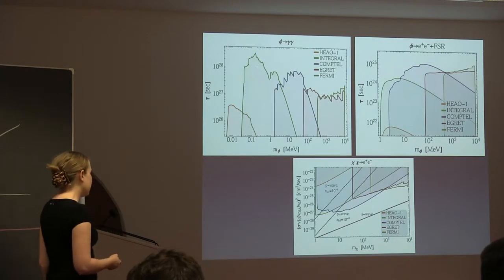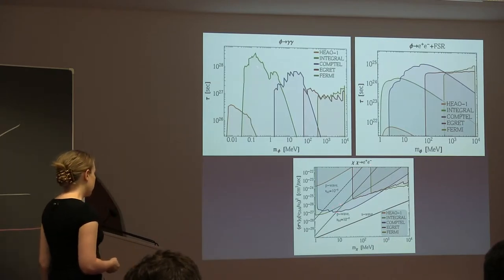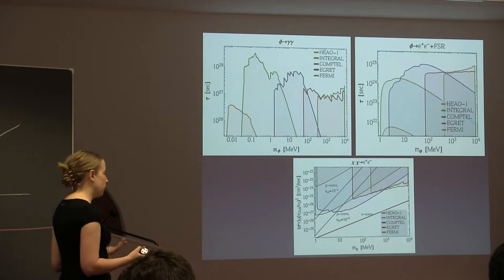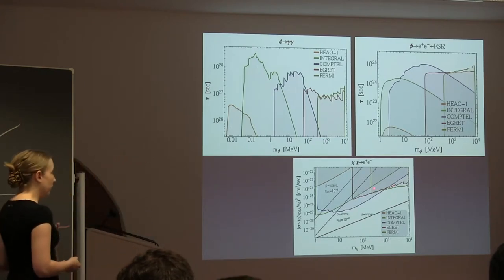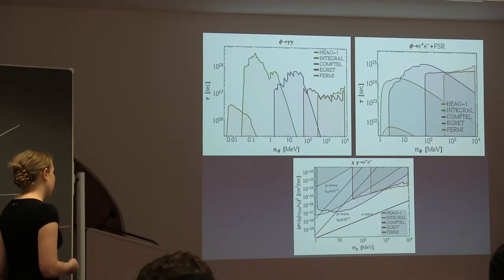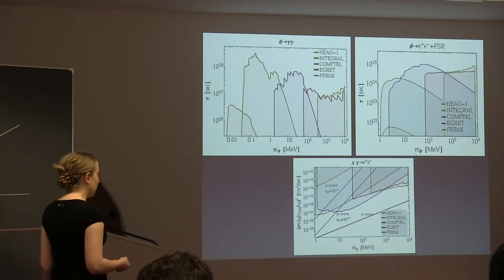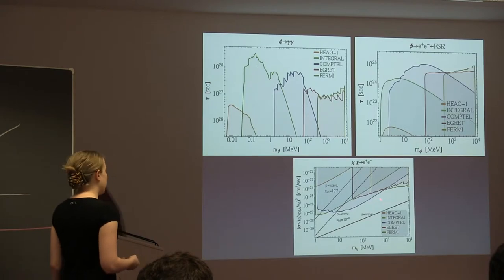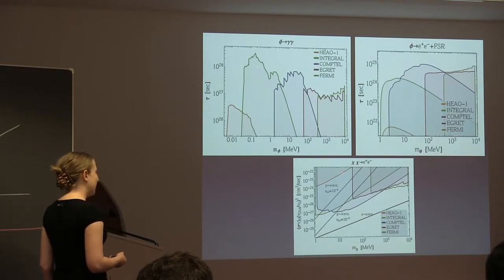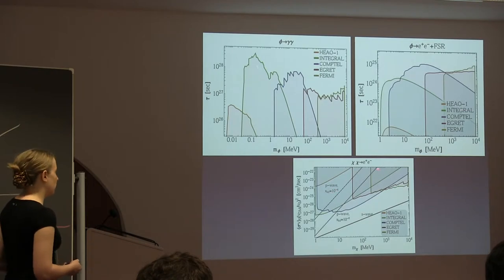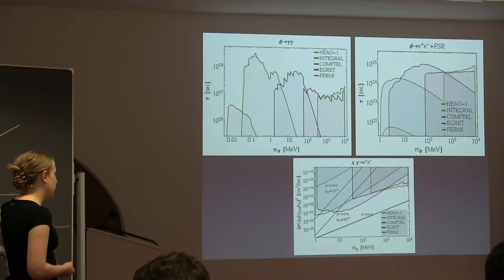For dark matter annihilating to e+e-, the cross-section at a velocity typical of our galactic halo is shown. The black line is the CMB constraint, which I'll discuss in more detail later. All these photon-based lines are well above the CMB constraint line for s-wave annihilation — so looking at photons is not the best approach for s-wave annihilating dark matter. But for p-wave annihilation, these constraints can be competitive, since the CMB bounds are weaker in that case.